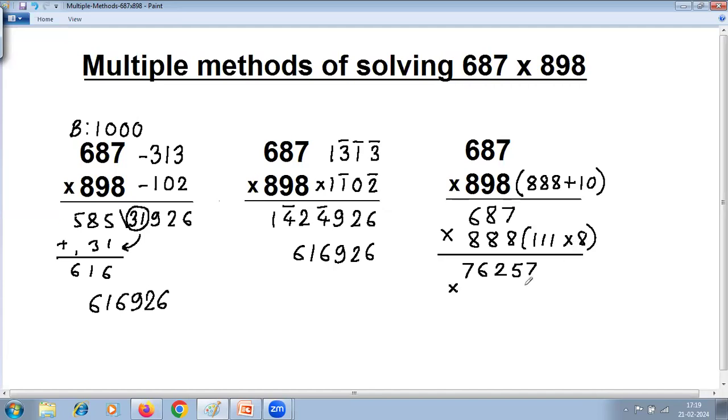Multiply 76,257 into 8. 8 into 7 is 56. 6 carry 5. 8 into 5 is 40, plus 5 is 45. 5 carry 4. 8 into 2 is 16, plus 4 is 20. 0 carry 2. 8 into 6 is 48, plus 2 is 50. 0 carry 5. 8 into 7 is 56, plus 5 is 61.